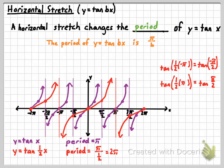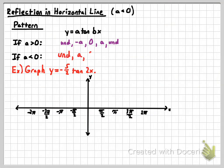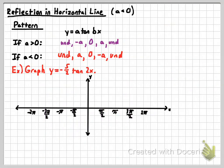Now let's put those two pieces together along with one other thing — reflections in horizontal lines. A reflection in a horizontal line happens when a is less than 0. All we need to do to graph a reflection effectively is know how the pattern changes. Instead of going undefined, then negative a, zero, a, undefined, what's going to happen is you'll still start with undefined, but then we're going to get positive a, zero, negative a, undefined. The tangent graphs, instead of going up from left to right, are going to go down from left to right instead.